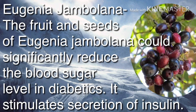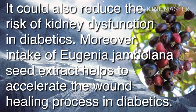Eugenia jambulana — the fruit and seeds could significantly reduce blood sugar levels in diabetics. It stimulates secretion of insulin and could also reduce the risk of kidney dysfunction in diabetics. Intake of Eugenia jambulana seed extract helps to accelerate the wound healing process in diabetics.